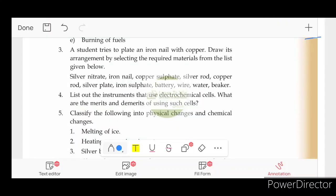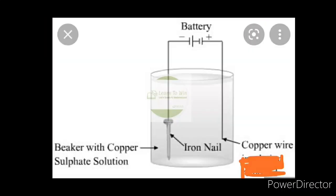A student tries to plate an iron nail with copper. Draw its arrangement by selecting the required materials from the list given below. One iron nail, copper, copper sulfate solution, battery, wire, water, beaker. Now, let's see the materials we need. Iron nail, copper wire, beaker with copper sulfate solution, battery.